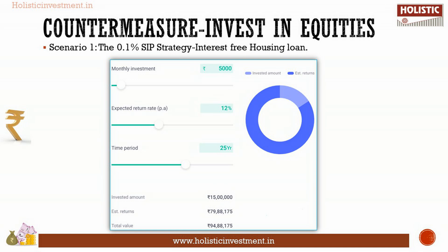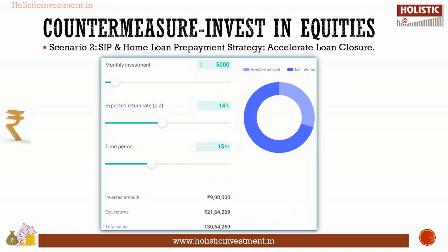Scenario one: the 0.1% SIP strategy — interest-free housing loan. Continue investing just 0.1% of your home loan as a Systematic Investment Plan in an equity fund. This can help offset the interest you pay throughout your tenure. Consider you invest Rs. 5,000 per month — that is 0.1% of the Rs. 50 lakh loan — in an equity mutual fund with a return assumption of 12% CAGR and a tenure of 25 years. This gives you approximately 79 lakhs, which is even more than the interest we are paying over 25 years. Remarkably, a mere 0.1% of your loan invested through SIP can practically render your home loan interest-free.